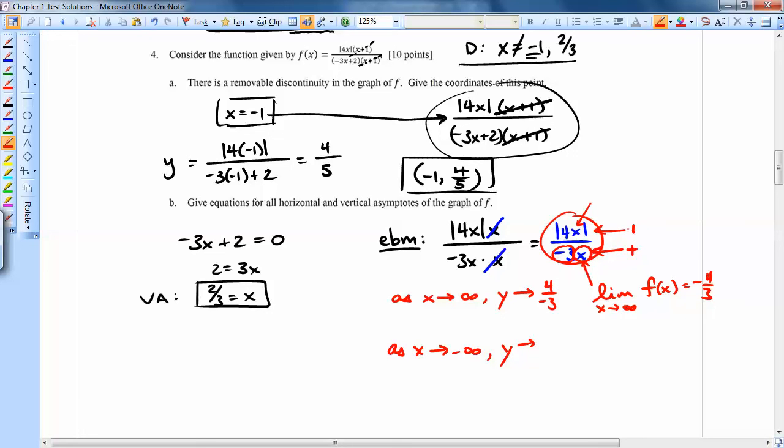So now I've got a positive number over a positive number. So when I do that, and the x's will then cancel, I'm going to get 4 over 3, positive 4 over 3.